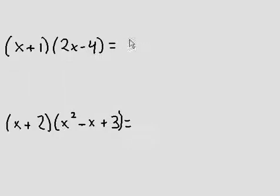So x times 2x is 2x squared. x times negative 4 is negative 4x. 1 times 2x is positive 2x. Positive 1 times negative 4 is negative 4.